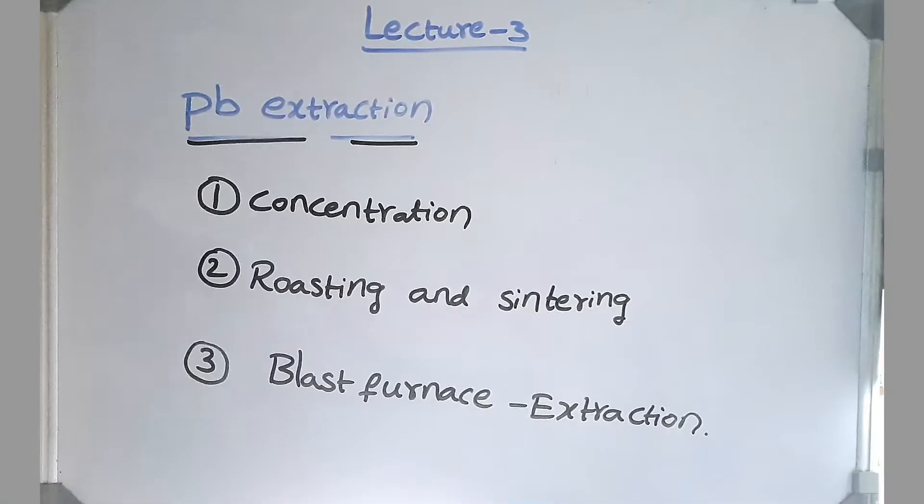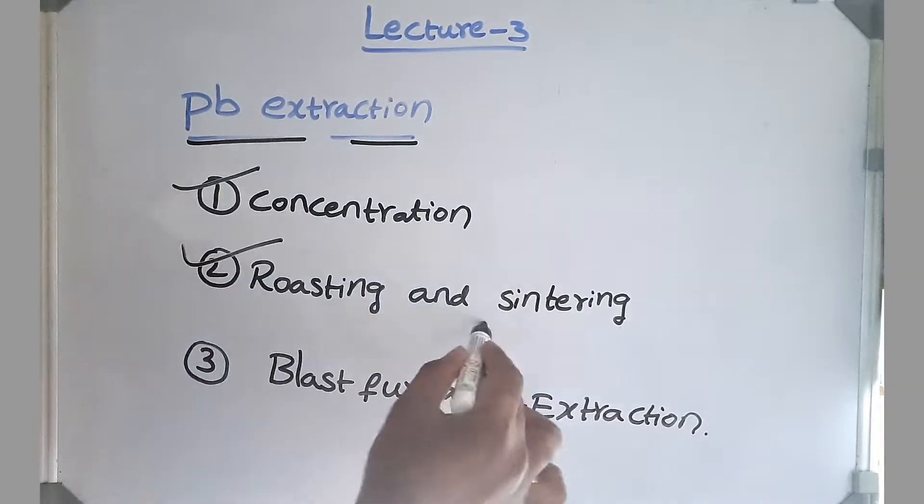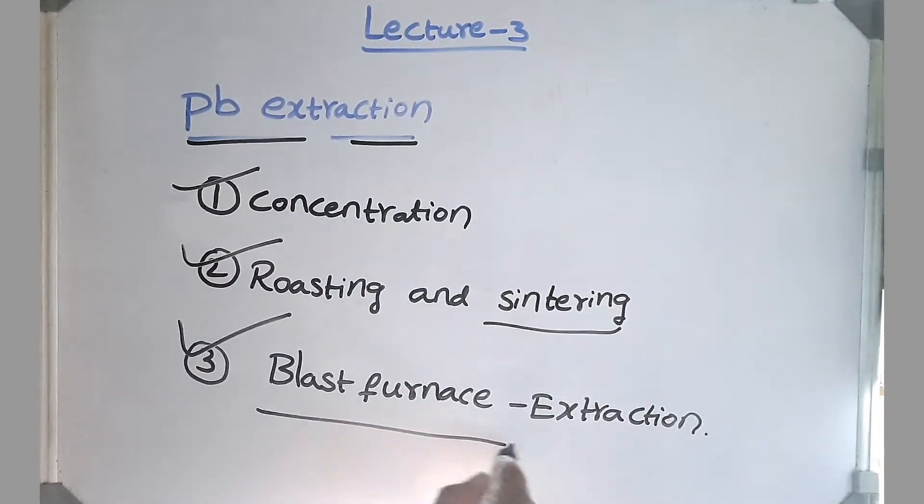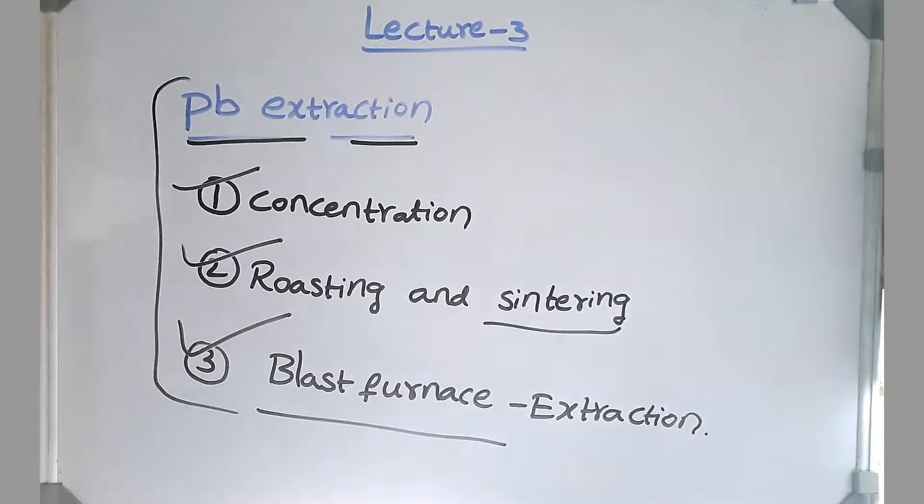Hello friends, hope you are doing well. Lead extraction consists of three basic steps: concentration of the ore, then roasting and sintering of the ore, and then followed by reduction in the blast furnace. This is the most economical way of extracting lead. So let's start one by one.